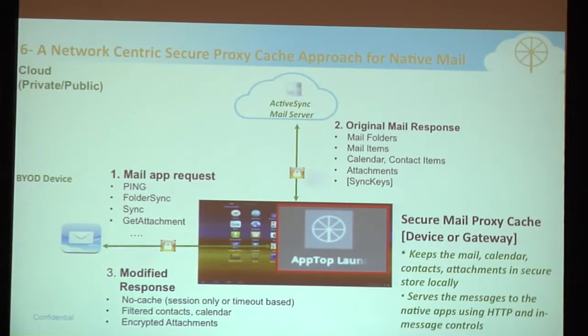If you look at the ActiveSync protocol, the email app generates commands: ping to check for new updates, sync commands, folder sync, get attachment. The MSDN article is a 300-page document on the ActiveSync protocol. When the mail server receives those commands, it responds with the appropriate mail content, calendar item, contact item, attachments, and state. What we do is take what the server sends back and modify the content so the native app can deliver it without maintaining any state.